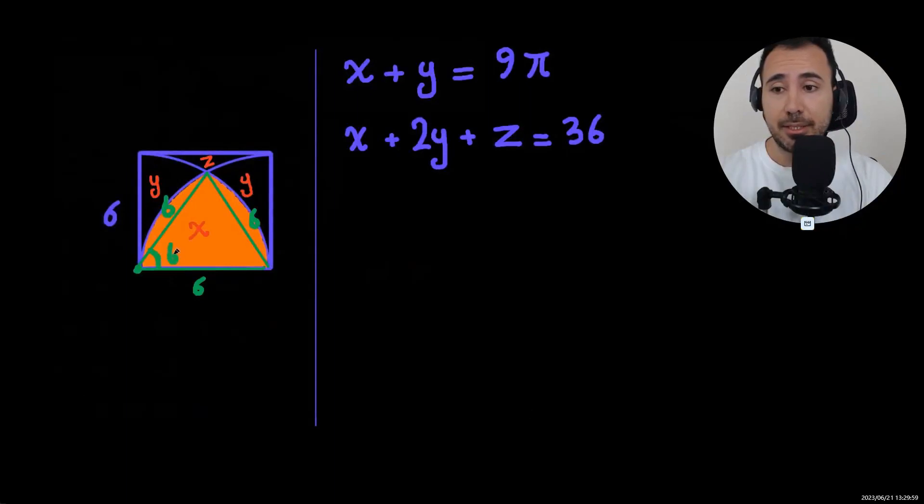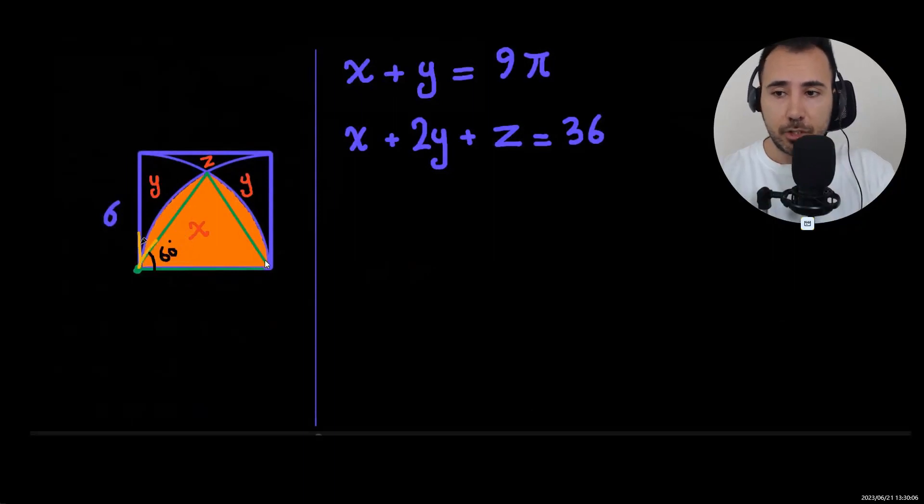So that means we have an equilateral triangle. Each angle is 60 degrees. And the square has a right angle, which is 90 degrees. So this yellow angle is 30 degrees.